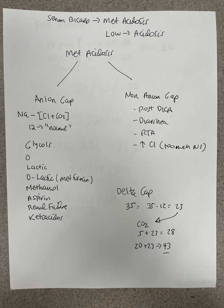People don't always come in with a pure acid-base picture. Reality is complicated. There are many times people will come in with multiple acid-base disorders. When you have an anion gap, what I like — and a lot of people talk about the strong ion difference, but I think it's too complicated — is what you call the delta gap.